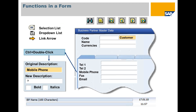These are the functions in the form. The graphic shows the form of the Customer Business Partner Master. This form serves as an example to explain some of the generic functions within any form in SAP Business One.